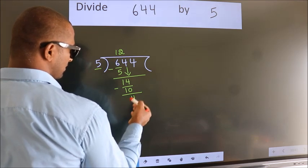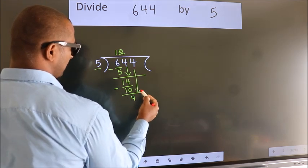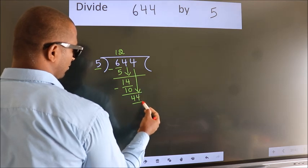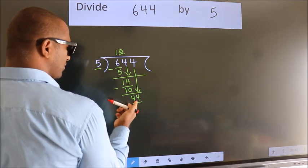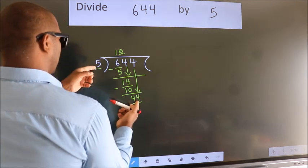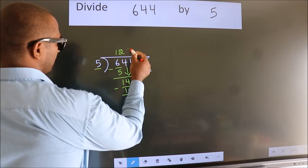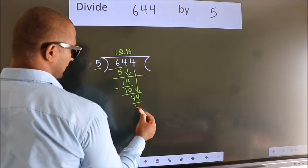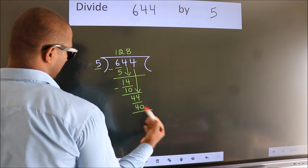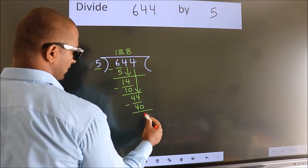After this, bring down the beside number. So 4 down. So 44. A number close to 44 in 5 table is 5 eights 40. Now we subtract. We get 4.